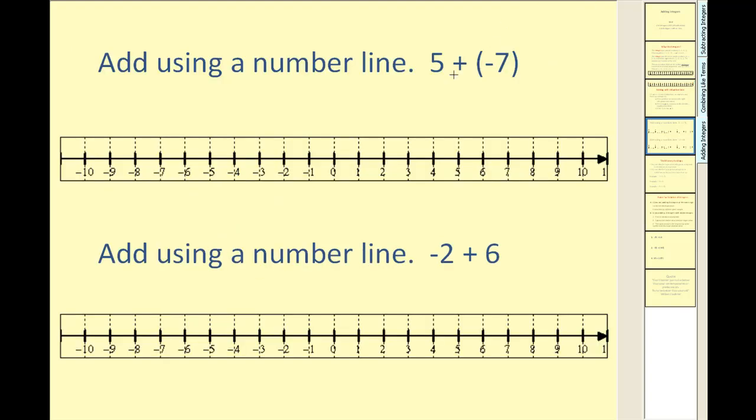Let's give it a try. Five plus negative seven. We will start at positive five. Since we're adding a negative seven, we move left seven units. And we end at negative two. Five plus negative seven is equal to negative two.